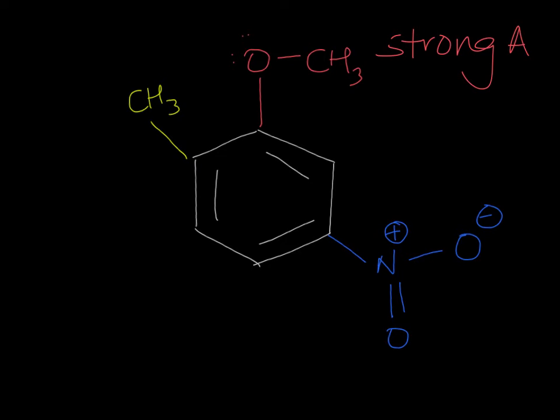Next in yellow you have a methyl group and that can donate to the ring weakly via hyperconjugation which makes it a weak activator. And finally you have a nitro group here in blue that has a positive charge right next to the ring which means it withdraws electron density pretty strongly out of the ring which makes it a strong deactivator.